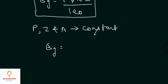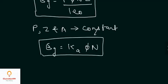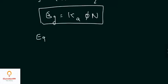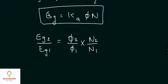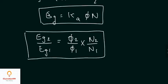Since P, Z, and A are constants, the ratio of generated EMFs is Eg2 over Eg1 equals phi-2 over phi-1 times N2 over N1. This gives the relationship between flux and speed of rotation.